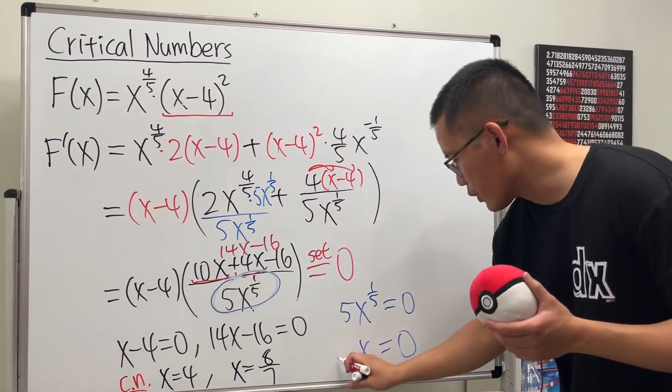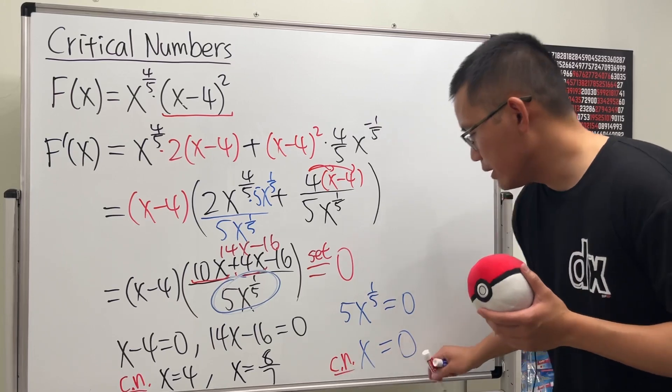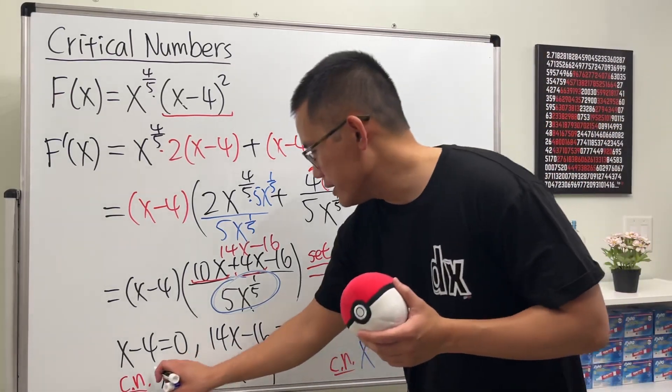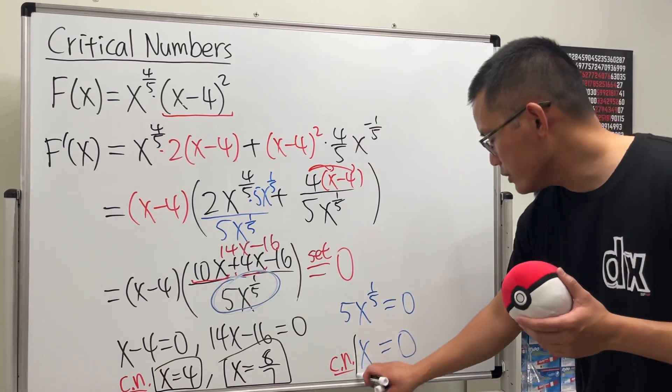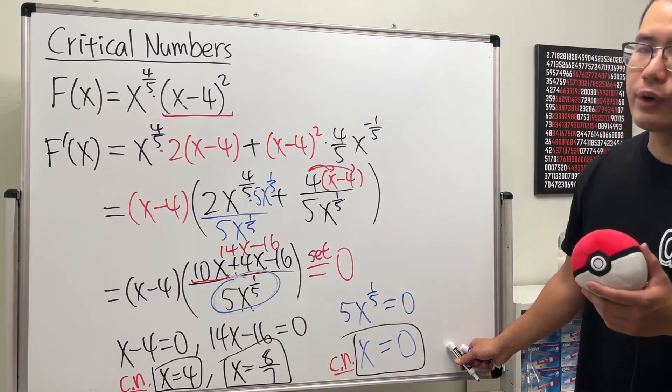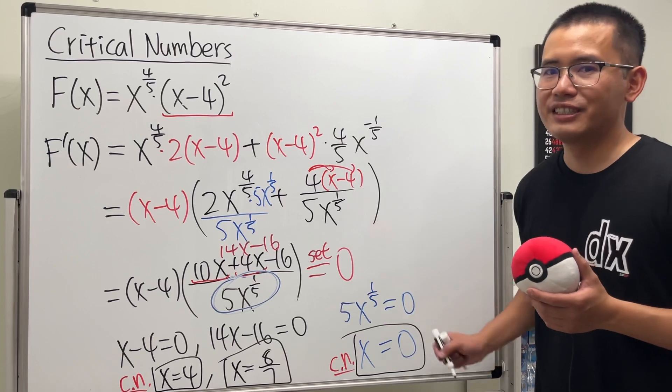So this is considered a critical number as well. So ladies and gentlemen, three answers: x equals 4, 8/7, and also 0. All right, for more examples like this, check out my playlist.